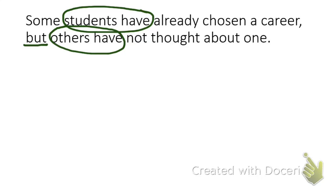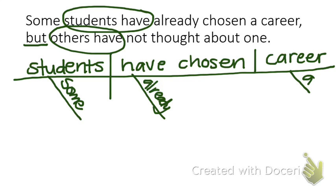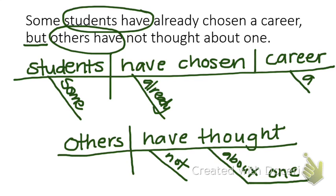Those two independent clauses in the compound sentence are joined by the coordinating conjunction 'but.' We need to begin by diagramming the first independent clause, then the second independent clause. The word 'but' goes on a solid horizontal line, and then it is connected verb to verb with a dotted line.